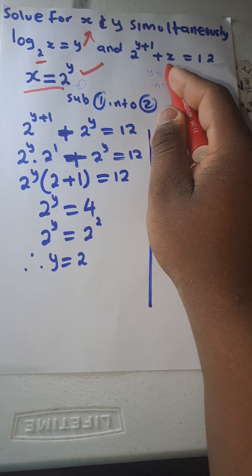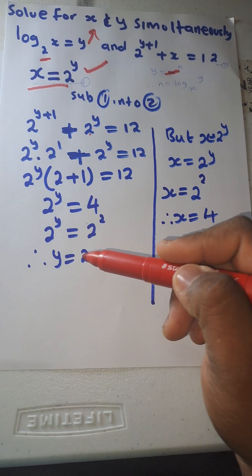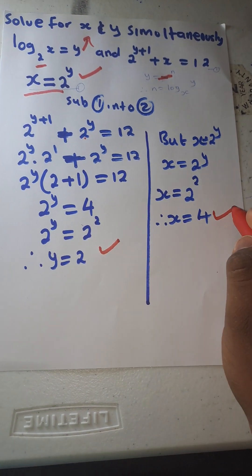And then you're going to make x or y the subject there. And then where there is x you put 2 to the power of y. And then you're going to solve your maths using exponent values as you can see there. Then you get the y value and x value. Simple maths.